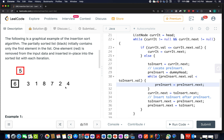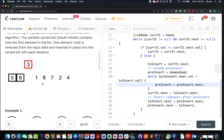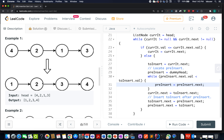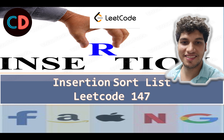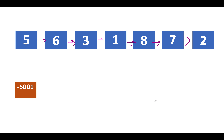We will follow the same process as depicted in that representation in our code. This is LeetCode 147, Insertion Sort List — a medium level question. Let's take the example from the question: the list is 5, 6, 3, 1, 8, 7, 2. As a default step in linked list questions, we create a dummy node and attach it to the head of the linked list.